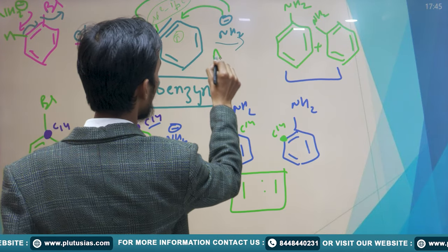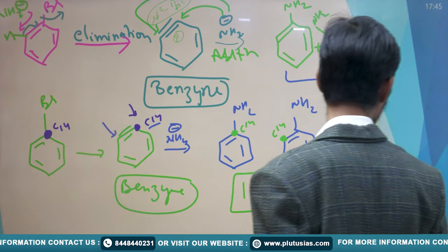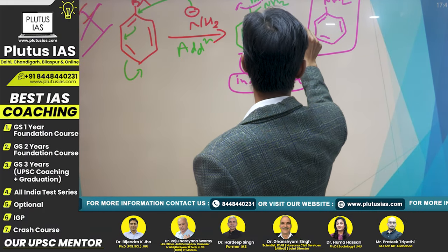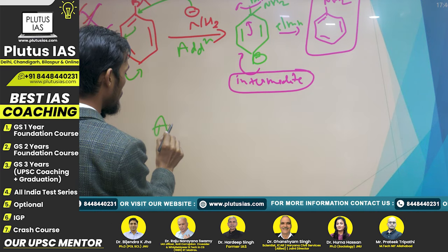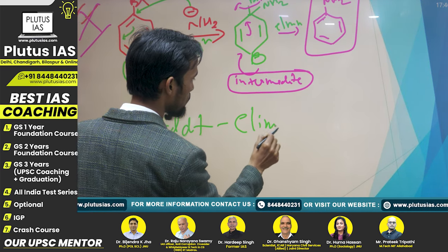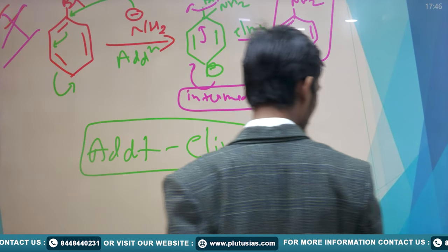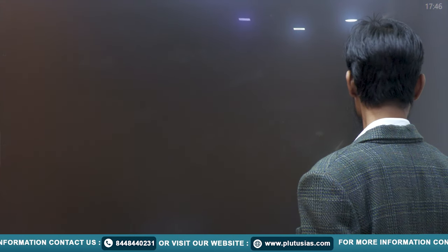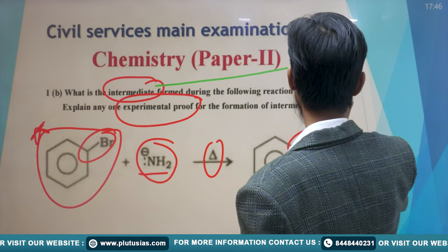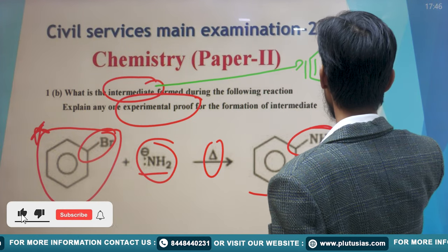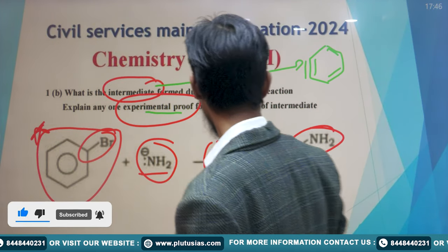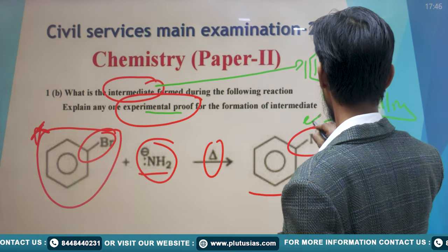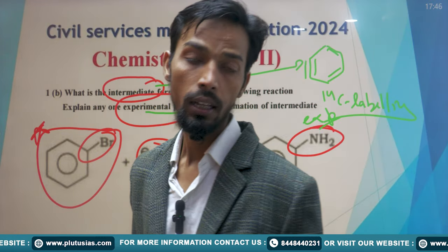The earlier pathway I showed was addition first, then elimination of Br — that is the addition-elimination route, which this reaction does not follow. Instead, it follows elimination first and then addition. So the intermediate in this reaction is benzyne, and the experimental proof is the carbon-14 labeling experiment given by scientist Roberts in 1953. That's all for today, thank you.